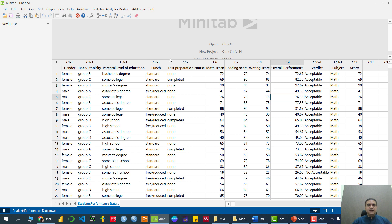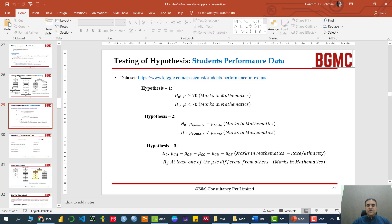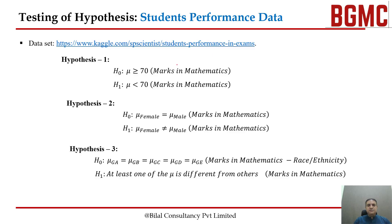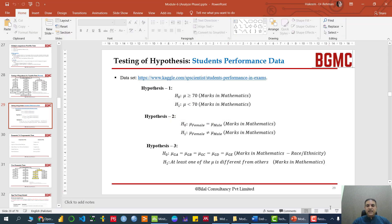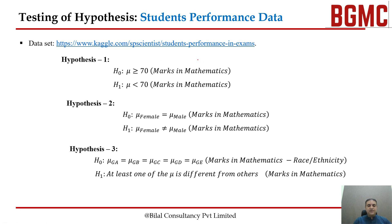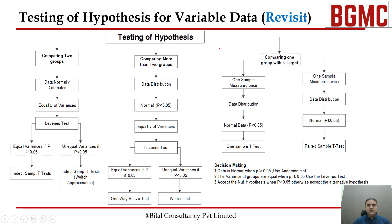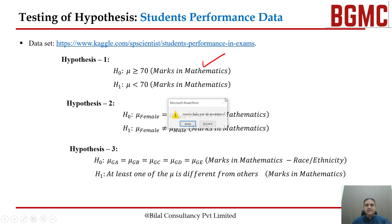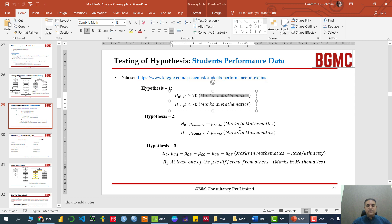We are interested in our first hypothesis: we want to test the claim that students' performance in mathematics is 70 marks or more. Whereas our alternative hypothesis is that the students didn't get 70 marks — it is on average less than 70. So if the data of the mathematics variable follows the normal distribution, this is a scenario of one sample t-test because we are comparing the performance of the student to a target number, which is 70. So we can apply one sample t-test if the math score follows the normal distribution.